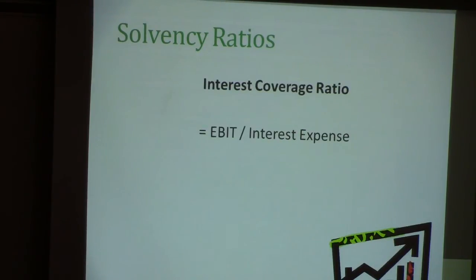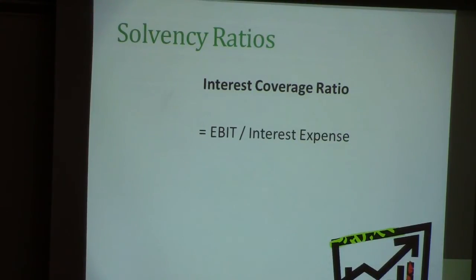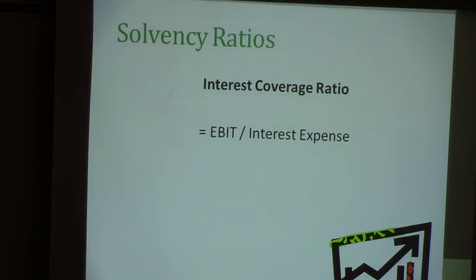The third solvency ratio is the interest coverage ratio, derived by taking EBIT — earnings before interest and taxes — divided by interest expense. This tells us how much interest we are paying to cover our liabilities and whether we are making enough money from the borrowed funds. In a high-interest environment, you will have a higher interest expense and must manage that carefully. This ratio is more important when interest rates are high. When interest rates are low, as they have been in recent years, companies can manage more loans because they pay less interest.